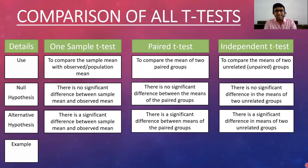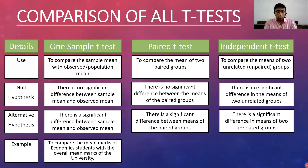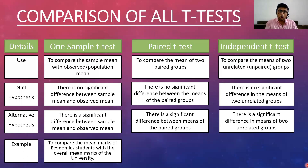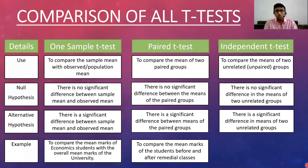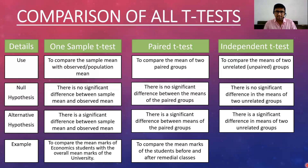Let's understand these three T-tests with examples. For the one sample T-test, suppose we want to compare the mean marks of economics students with the overall mean marks of the university — the university mean is the population or observed mean, compared with the sample mean from economics students. For the paired T-test, we compare the mean marks of students before and after remedial classes, where a student's marks before remedial classes make a pair with their marks after remedial classes. In paired T-tests, we collect data from the same observation at two different time points.